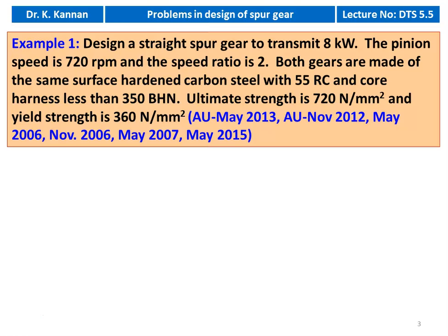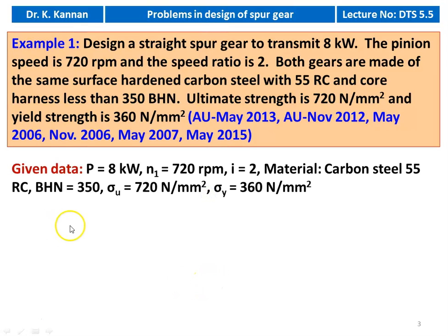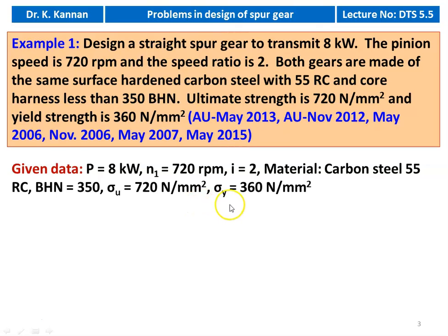Ultimate strength is 720 N/mm² and the yield strength is 360 N/mm². Given data: power is 8 kW, pinion speed 720 RPM, speed ratio 2, material carbon steel 55 RC, BHN less than 350, ultimate strength 720 N/mm², yield strength 360 N/mm².